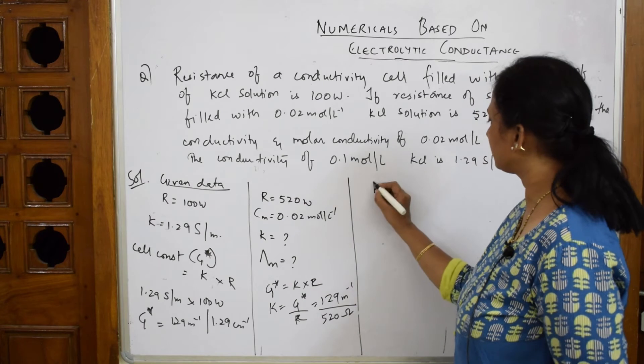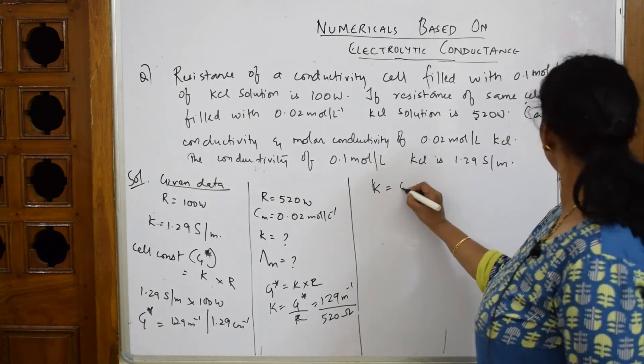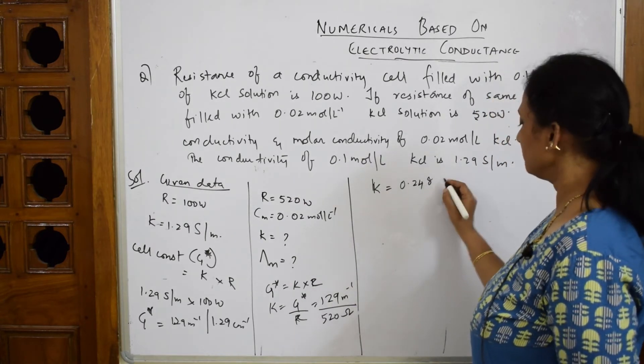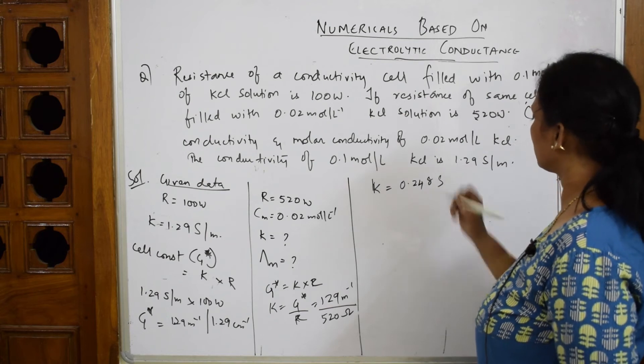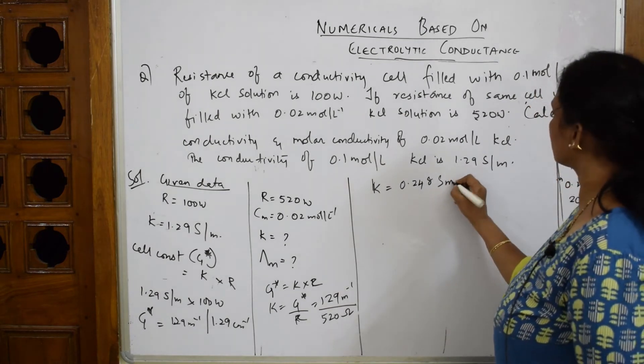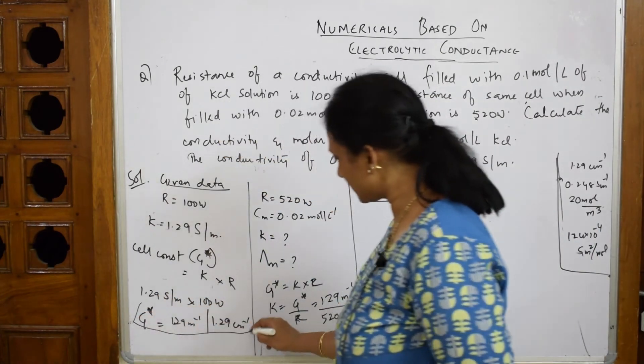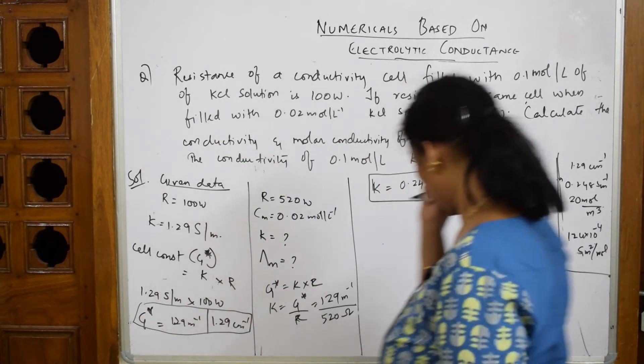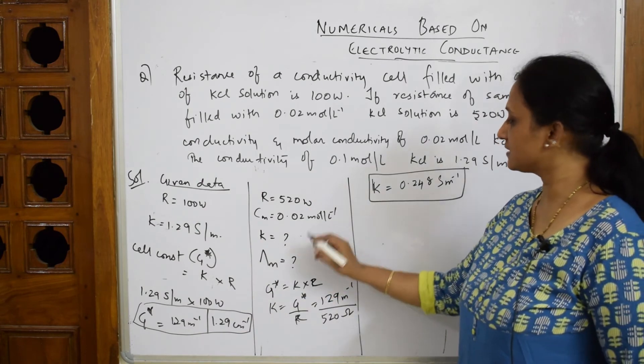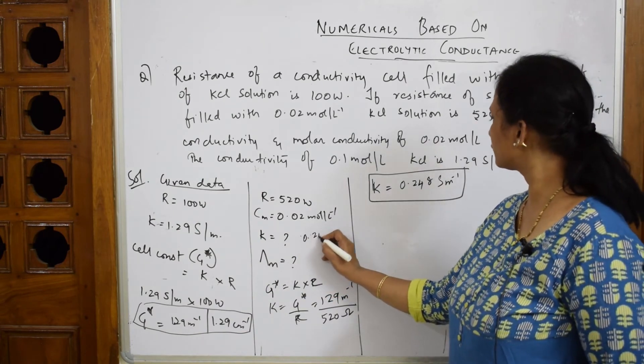The conductivity for this cell is 0.248 Siemens per meter. So I got 0.248 S/m for the second part.